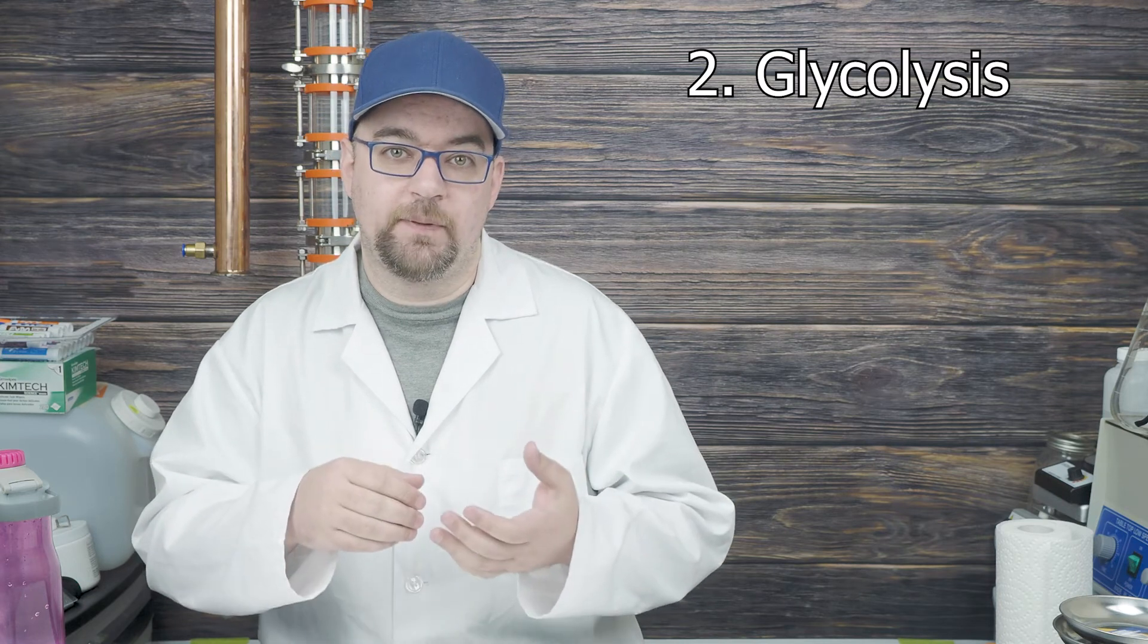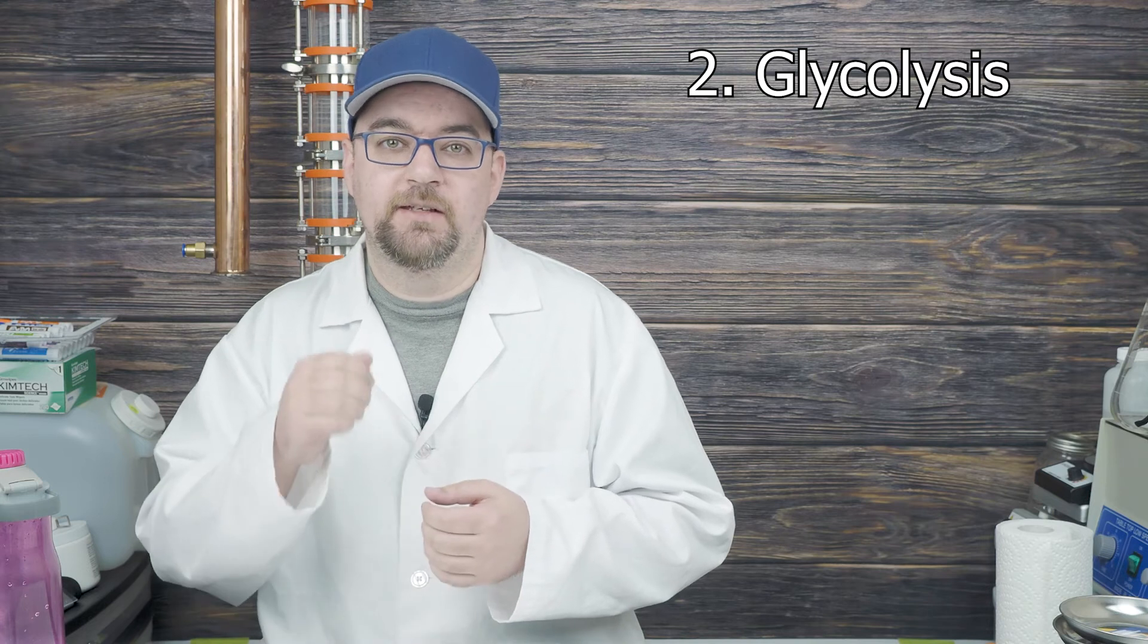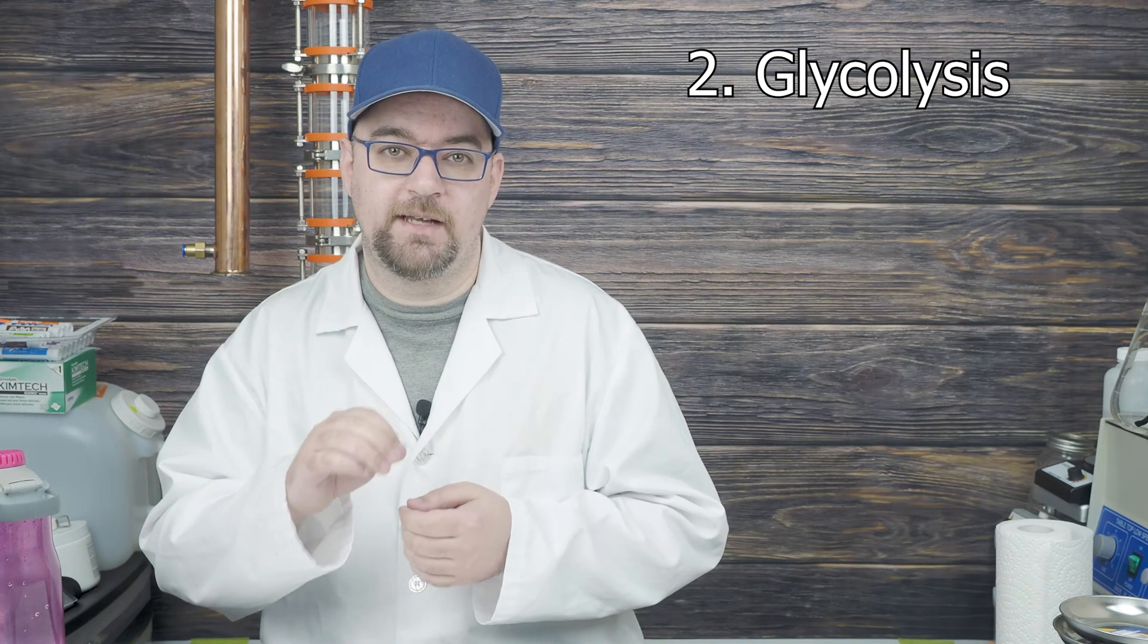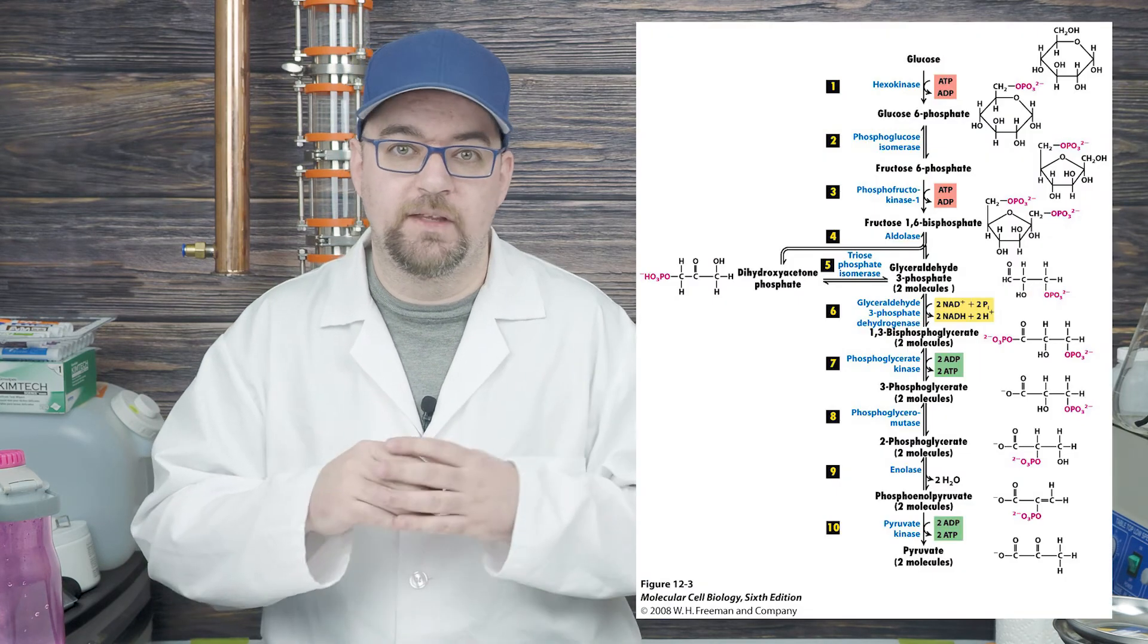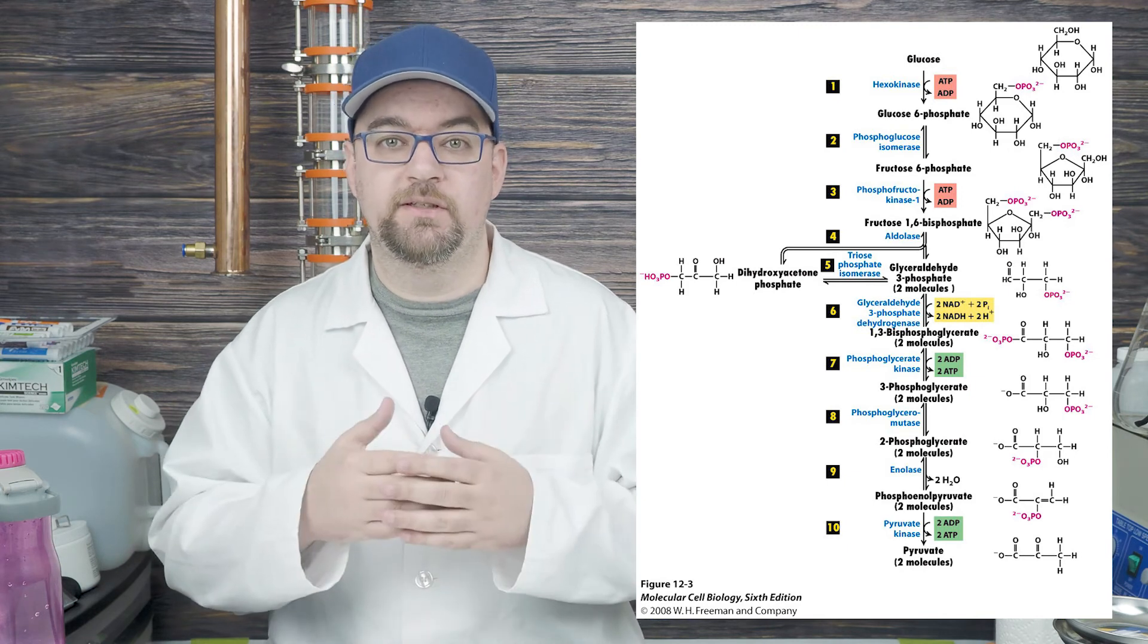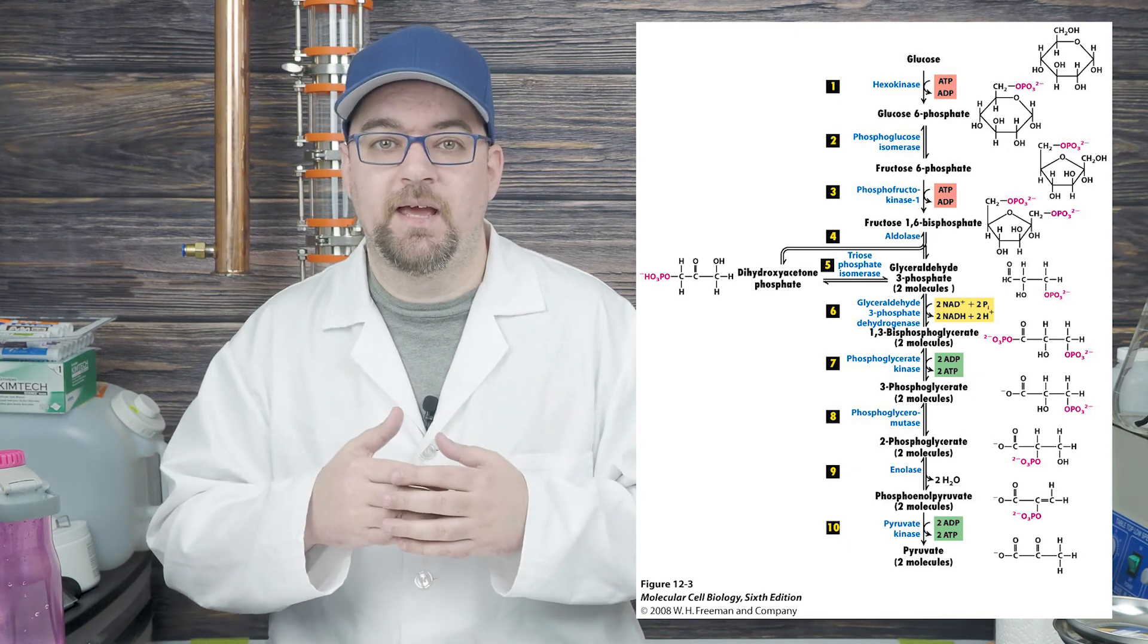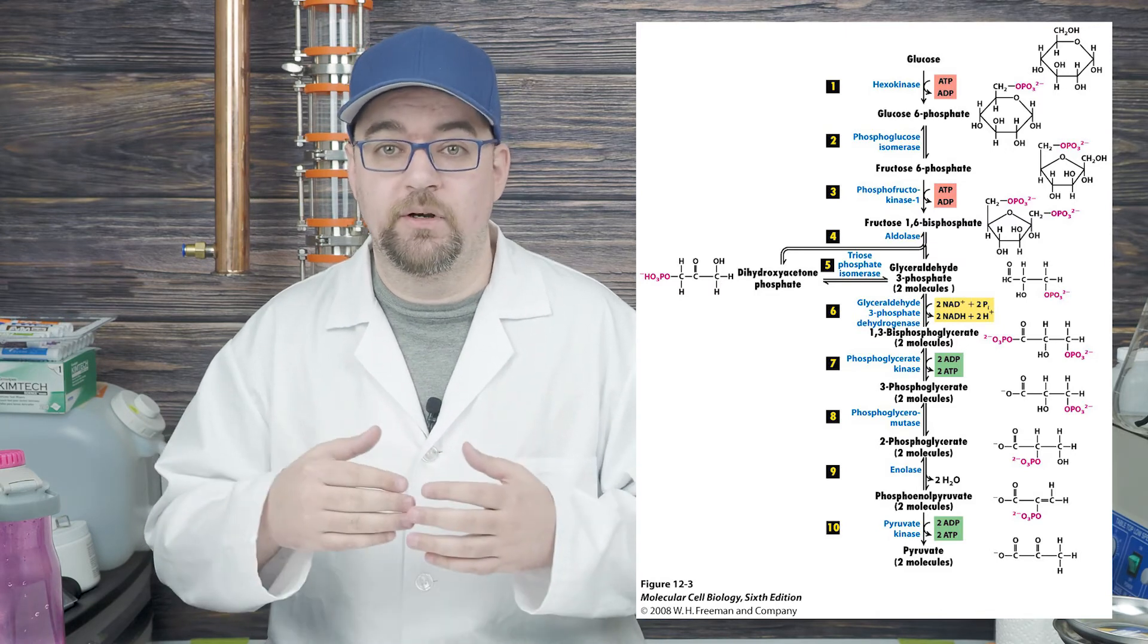The second major step is called glycolysis, and this involves the glycolytic pathway. This is where the yeast will take that sugar and push it through a 10-step process in order to turn it into pyruvate. Here you can see an image of the glycolytic pathway. The main reason I'm showing it to you is you can see how complex it is and how it involves quite a number of enzymes, which will be important later.